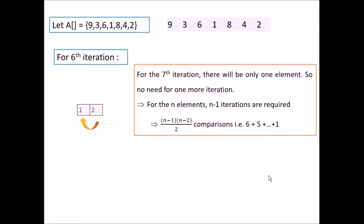So finally after sixth iteration only one element is left in the array that is unsorted. So for the seventh iteration there will be only one element, so no need for one more iteration.